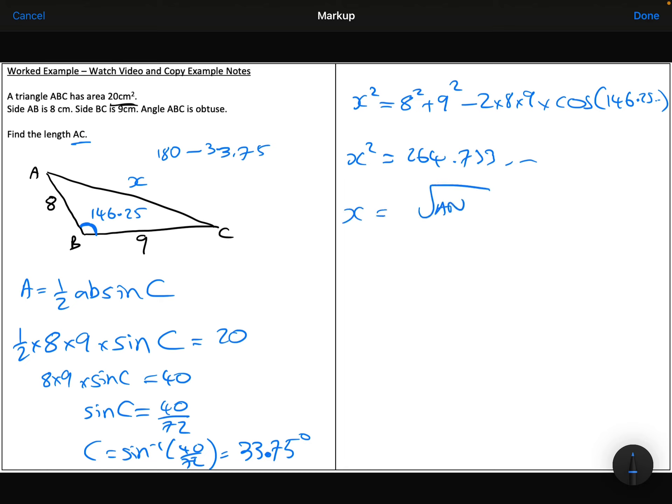Square root the answer, and I find that the length AC is 16.3 centimetres.